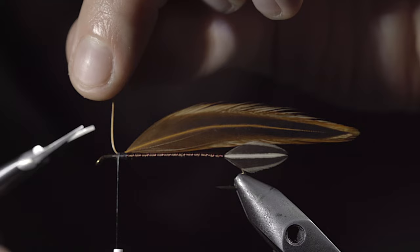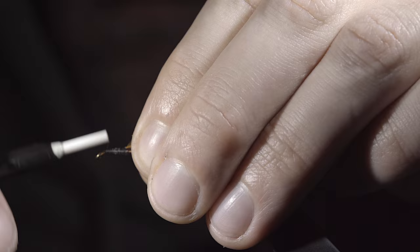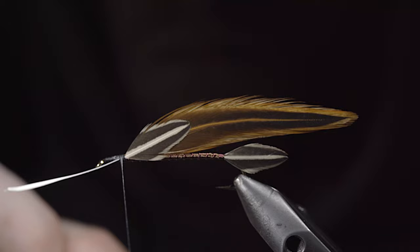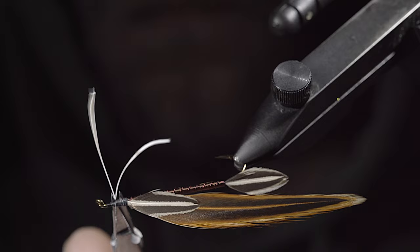Cover up your tag ends using as little thread as possible in the process. We'll once again grab our jungle cock cape, select two of the feathers off to the side, securing them to the side of our fly, starting with one side and then the other. Once again, snip your excess free and clean up the head of the fly.